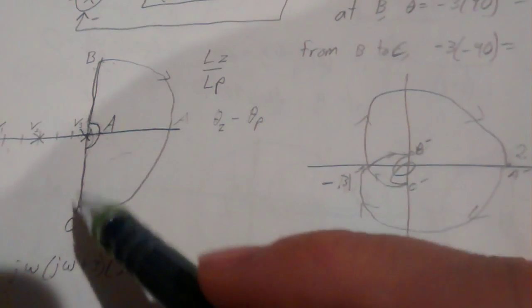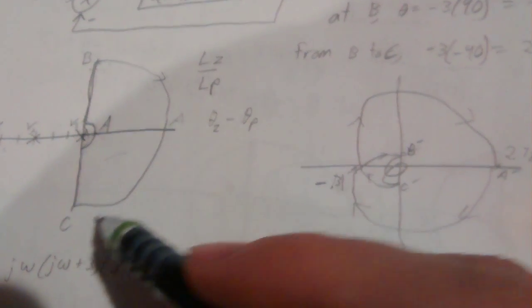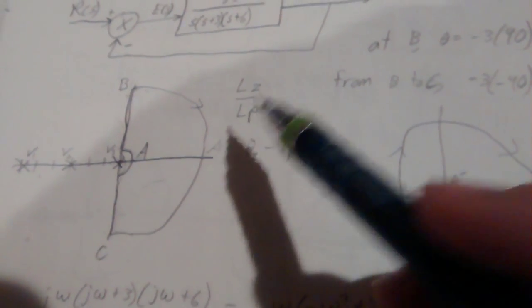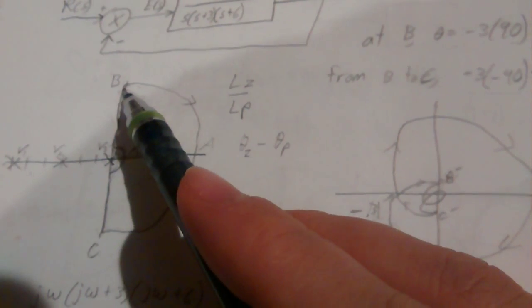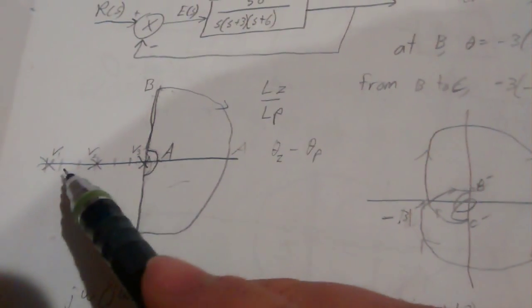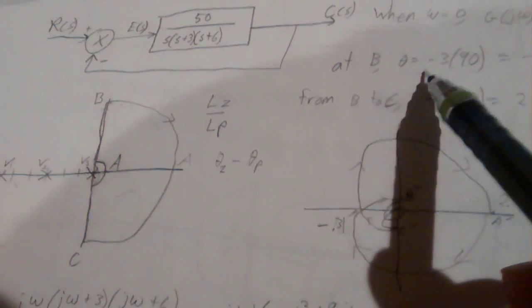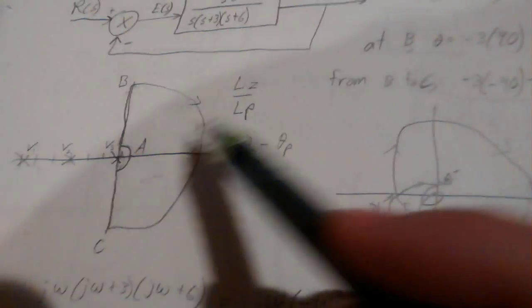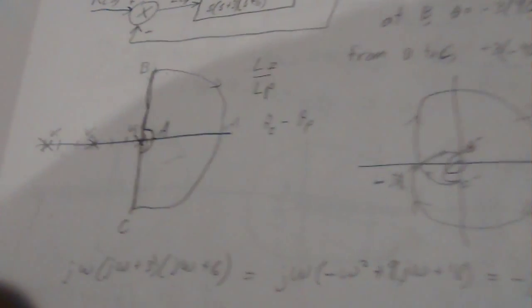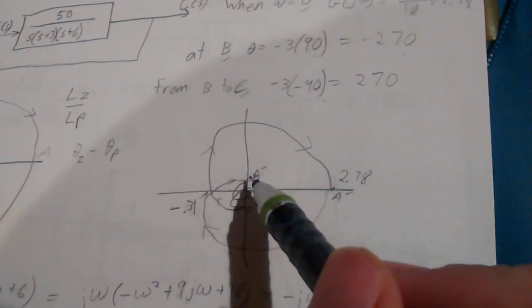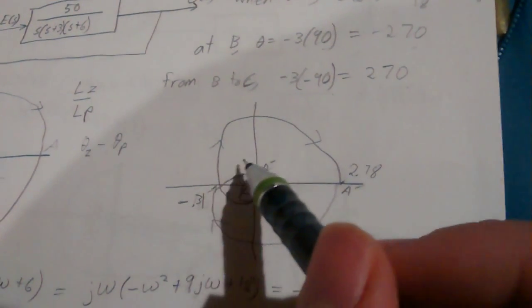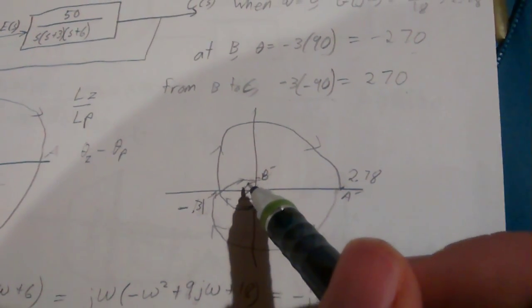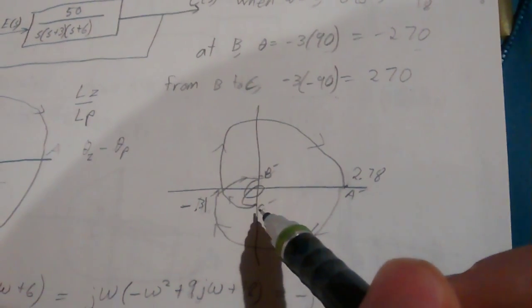Now at point C, we're still an infinite distance from the poles, so we still have 0 magnitude, but our angle's going to change. It goes from negative 3 times 90, which is negative 270, to negative 3 times negative 90, which is 270, since it's negative 90 degrees down at negative infinity. So it moves a positive 270 degrees coming back to point C.